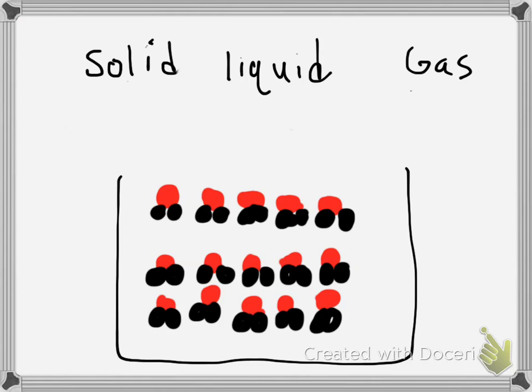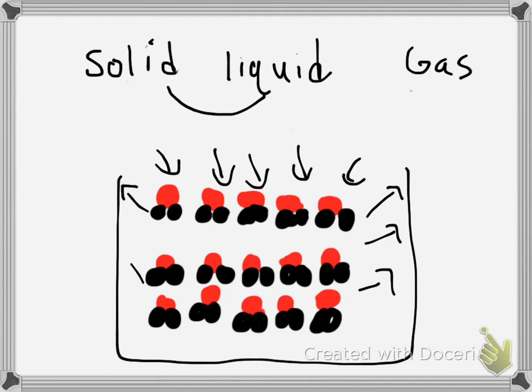In order to turn a solid into a liquid, you need to heat these molecules up. As you heat it up more and more, the molecules, each individual molecule, they'll start to move around more until they kind of just break out of their shell. They start moving around way more and become more free. This process is called melting.